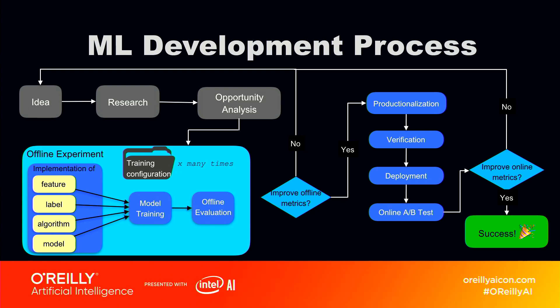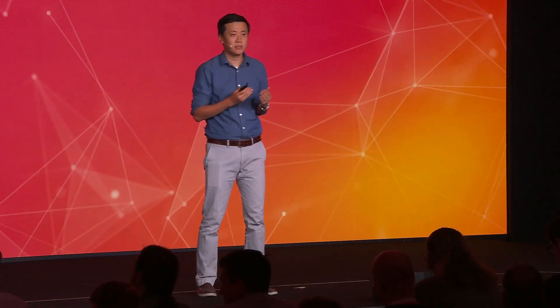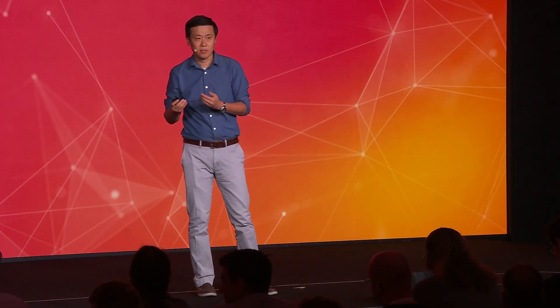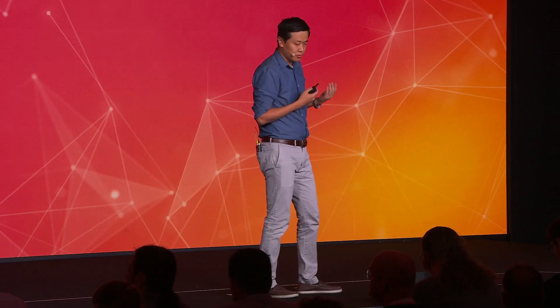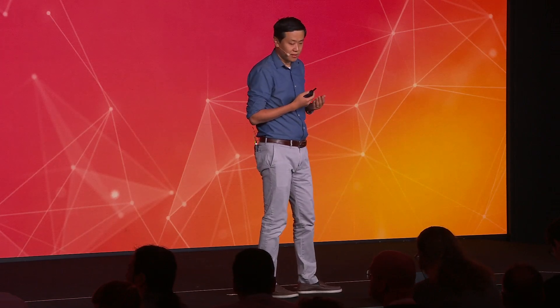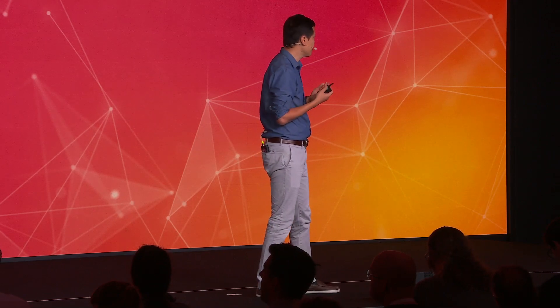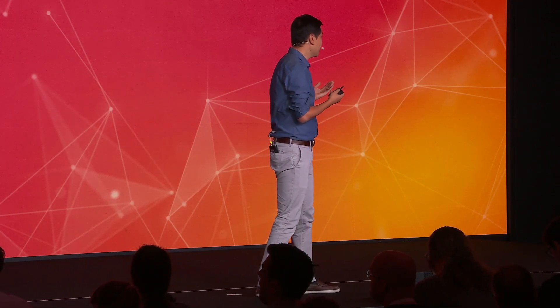The next stage is research. For any given idea, there must be existing solutions in the community. So in this case, the engineer would do research and find out the machine learning method that can be used to do this type of natural language processing — for example, BERT.